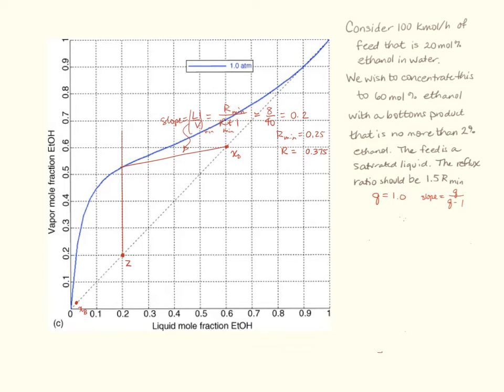The l over v I want to use is going to be that 0.375 over 1.375 giving me a slope of 0.27 that repeats equal to 3 elevenths. And so if I plot that I find that the actual operating line, and I'll draw this one in green, is going to be a slope approximately like that. It intersects the feed line here. And so I now switch from the enriching section to the stripping section. And there is my operating line drawn in green.